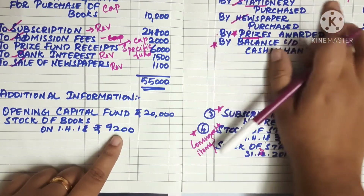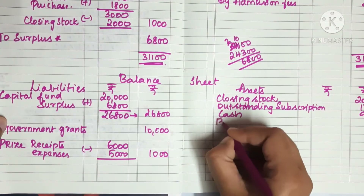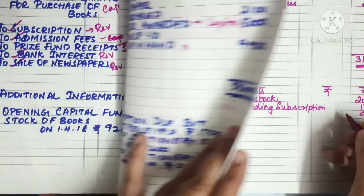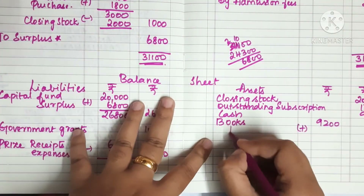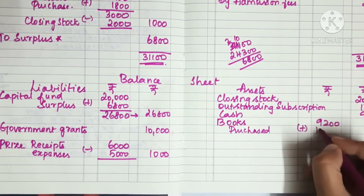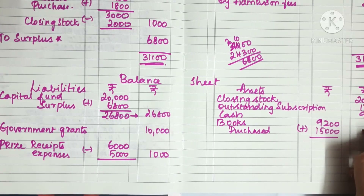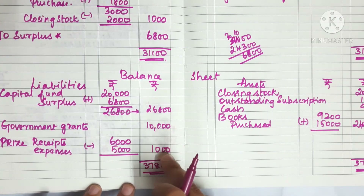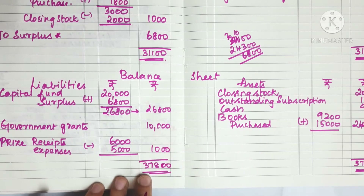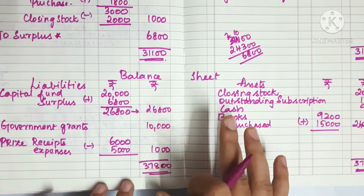Here are the assets. The opening balance is 9,200. We have the number of purchases of 15,000, and another figure of 10,024. Now the balance totals to 37,800. So the balance is 37,800 — this is the final balance on the balance sheet.